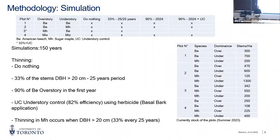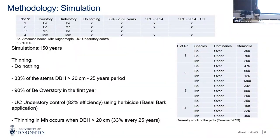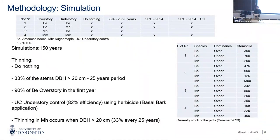For the treatments, we have one that's do-nothing — just run the model for 150 years and see the results. We have a 33% thinning focused on beech, though in maple stands thinning will occur as well. We have a more intensive thinning at 90% in year zero — so in 2024, enter and remove 90% of the overstory beech. And the final one includes understory control, which for this study we are considering as 82% efficiency in year zero for understory beech.